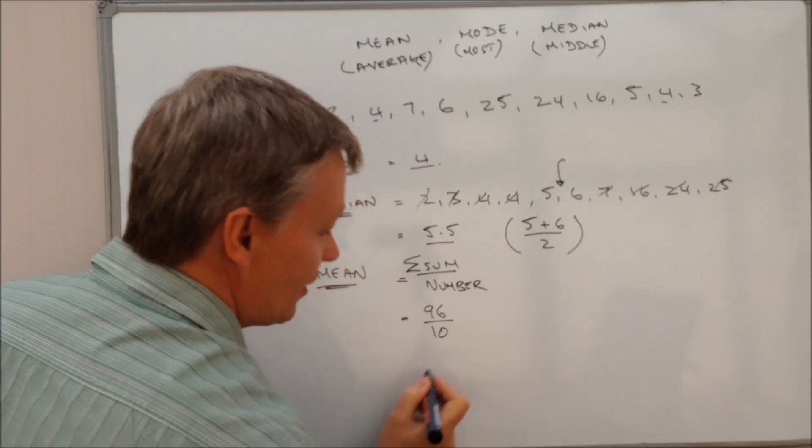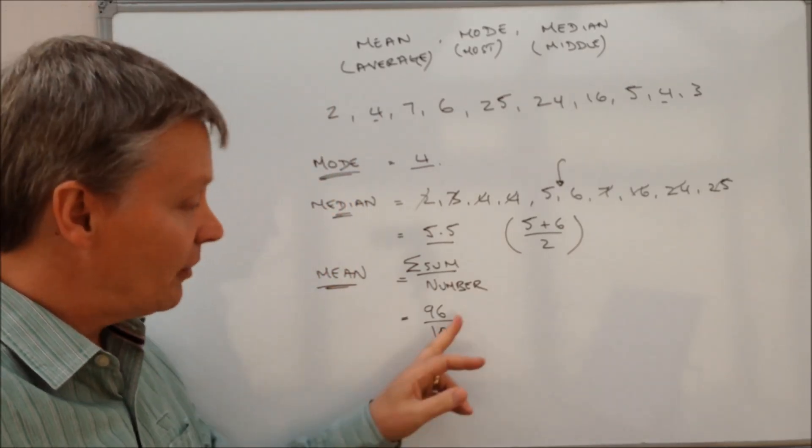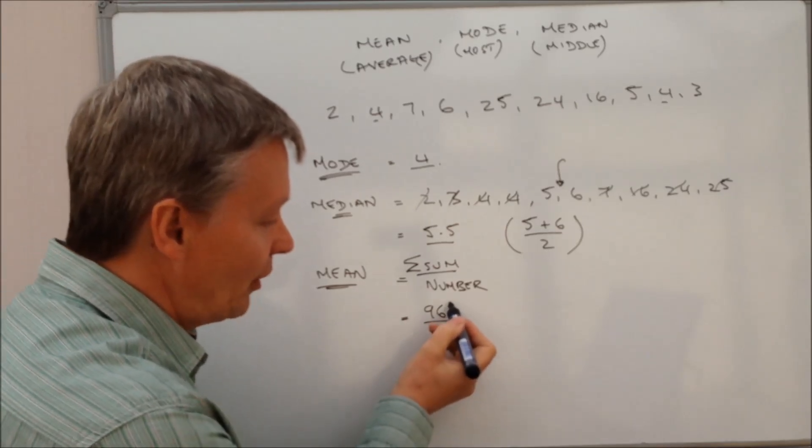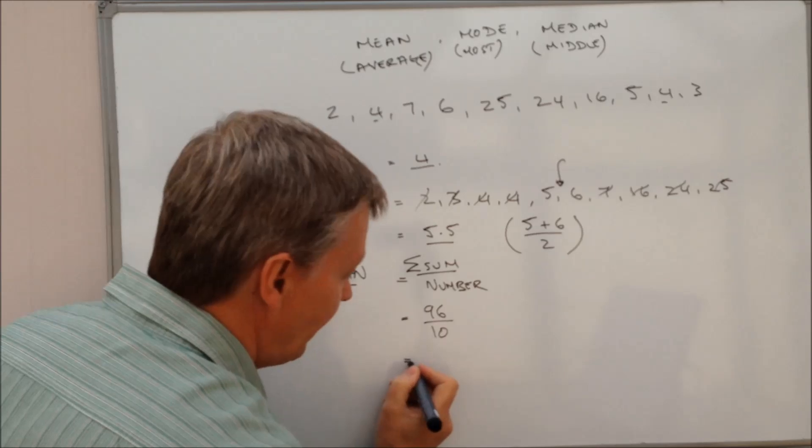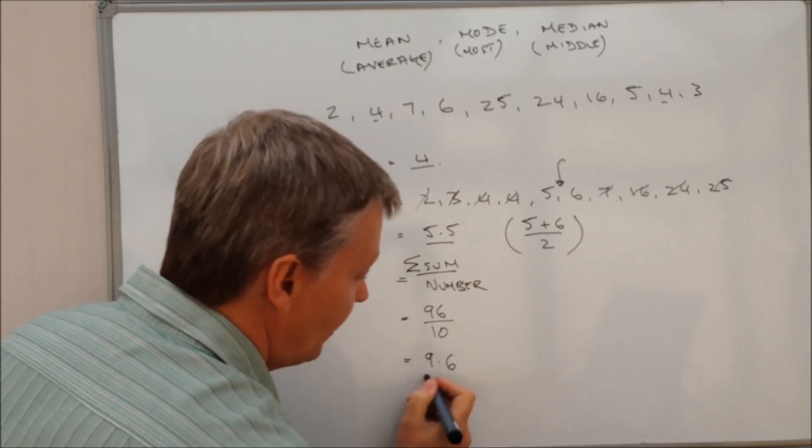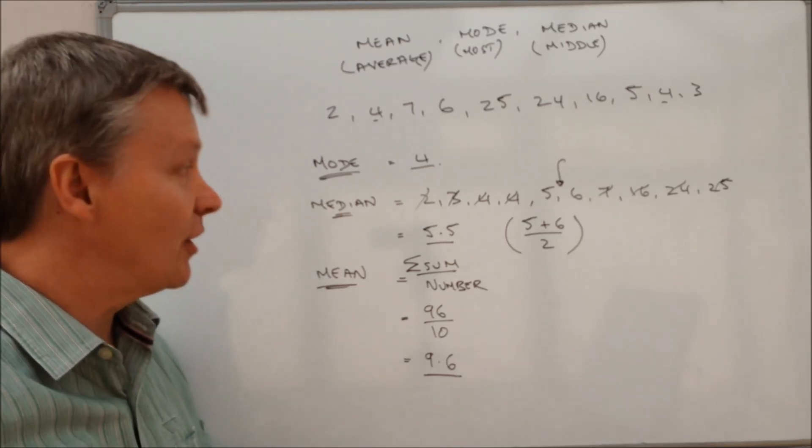And the number of them is actually ten values. So ninety six divided by ten. Well, to do that, all I'm going to do is move the decimal point one place to divide by ten. So my mean value is nine point six. And that would be the answer to that particular question.